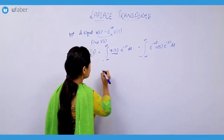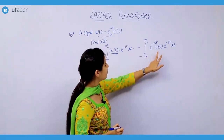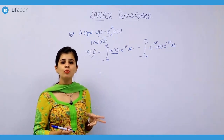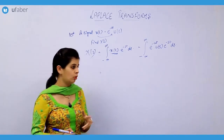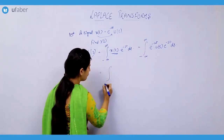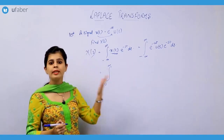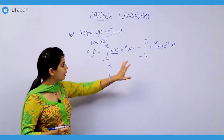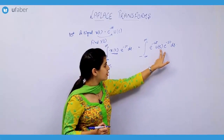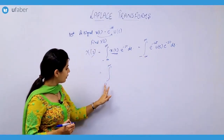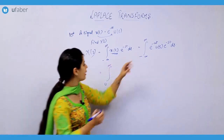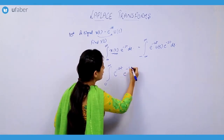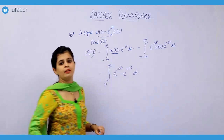Moving ahead — this u(t) here is a unit step function, and the unit step function only exists for t greater than or equal to 0. So I can say that the limits of integration would be from 0 to infinity, because for all negative values — from minus infinity to 0 — the value of this function becomes 0 due to the involvement of u(t). So the limit is constrained from 0 to infinity, giving us the integral of e raised to the power minus st dt.